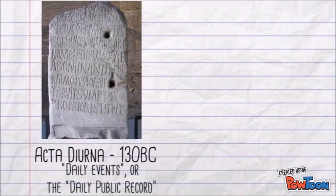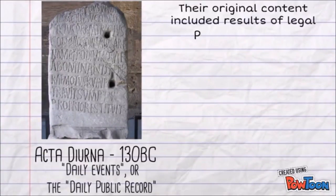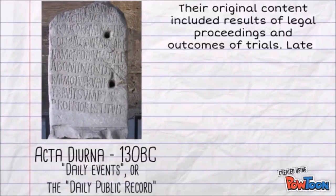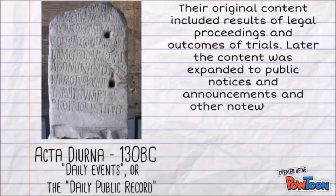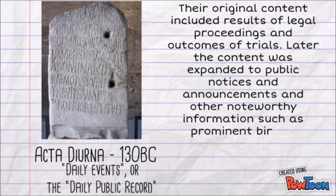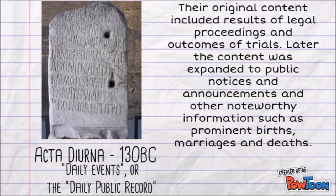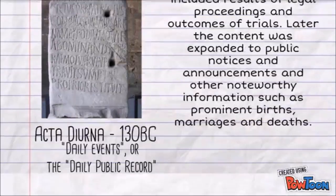The Acta Diurna, meaning daily events or the daily public record, in 130 BC were carved on stone or metal and presented on message boards in public places like the Roman Forum. They were also called simply Acta or Diurna.